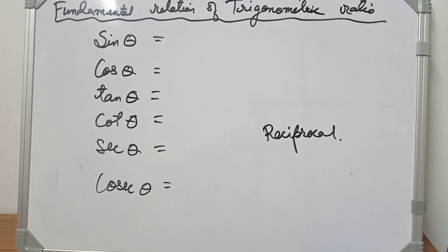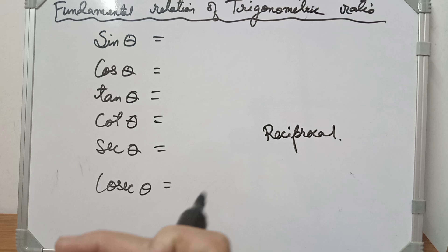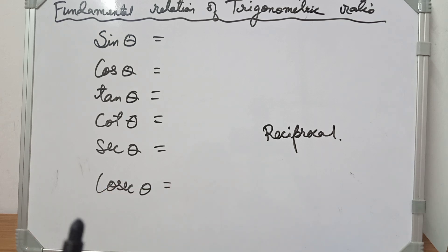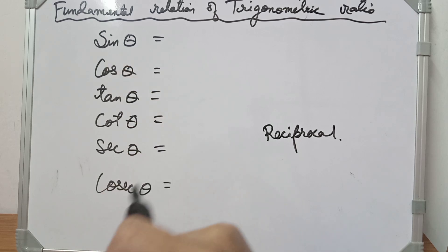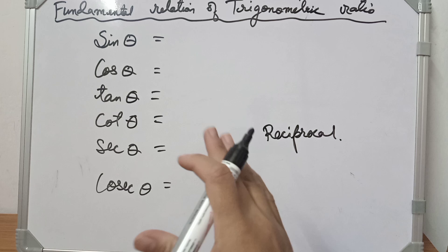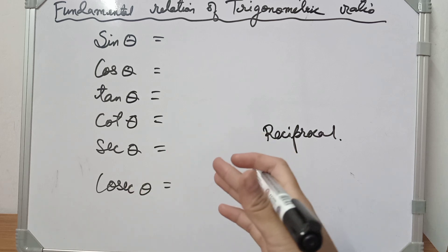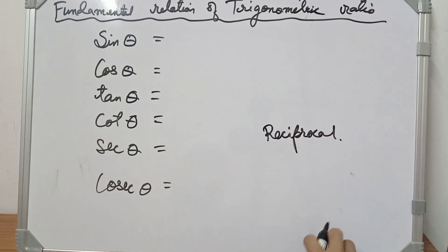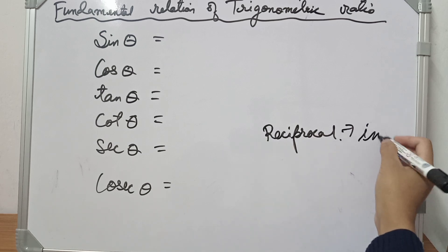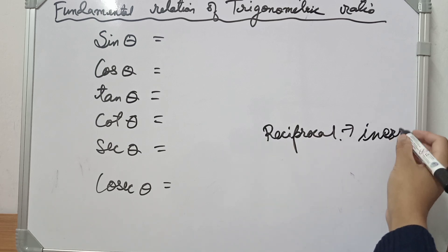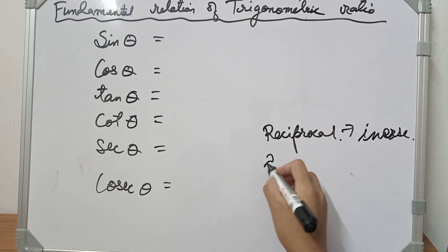If you want to use the fundamental relation of trigonometric ratios, you can apply trigonometric double. If you want to use the reciprocal, you can use the inverse. If you want to use the inverse, you can use the inverse.